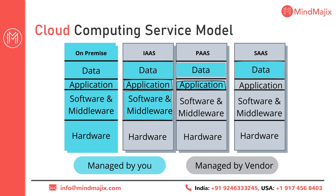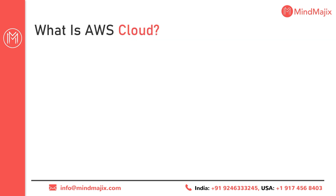In PaaS (Platform as a Service), along with the hardware, the cloud vendor also provides software, middleware, and OS. They give you a platform where you can host your application and manage your data. In SaaS (Software as a Service), hardware, software/middleware, and the application are all managed by the vendor — you are only responsible for your data. Best examples of SaaS are Outlook.com and Google Drive.